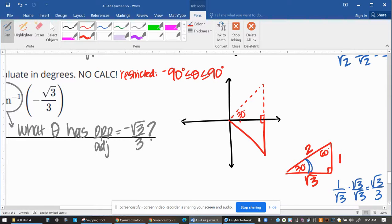Now, the restrictions for tangent inverse are the same as for sine inverse. It's either going to be the angle in quadrant 1 or quadrant 4.